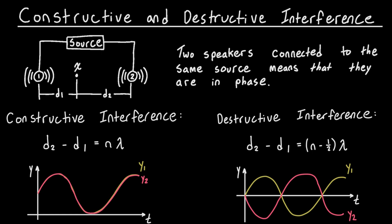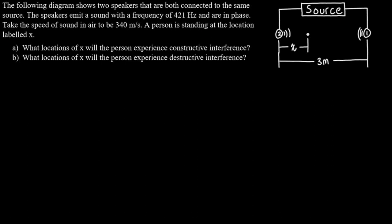Let's take a look at an actual problem to see how these are used. The diagram shows two speakers both connected to the same source. The speakers emit a sound with a frequency of 421 hertz and are in phase. Take the speed of sound in air to be 340 meters per second. A person is standing at the location labeled x. What locations of x will the person experience constructive interference, and what locations will the person experience destructive interference?